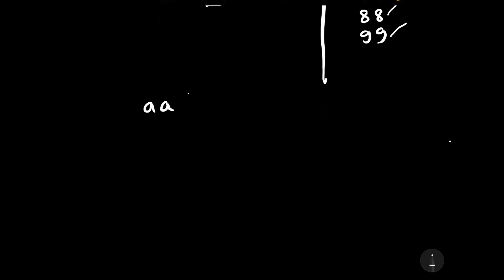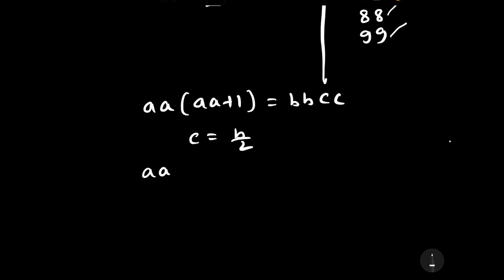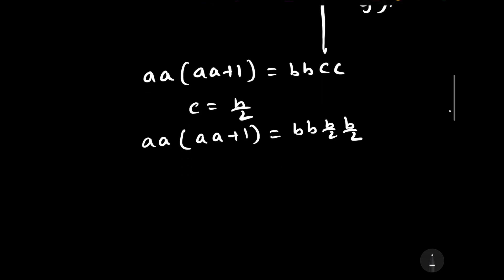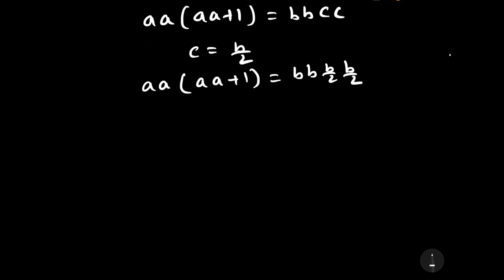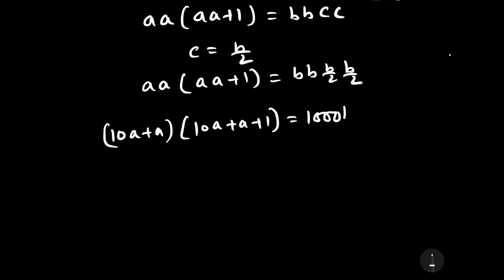Our question is a into a plus 1 is equal to bbcc, where c is equal to b by 2. Let us put the value of c, so it becomes a into a plus 1 is equal to bb(b/2)(b/2). Writing according to place value: 10a plus a into 10a plus a plus 1 is equal to 1000b plus 100b plus 10(b/2) plus b/2.